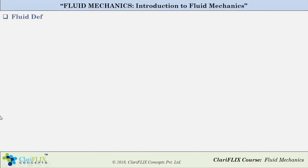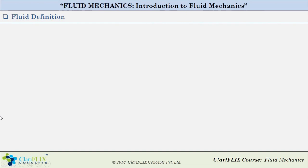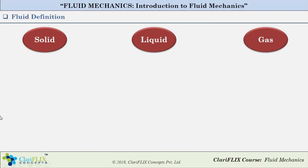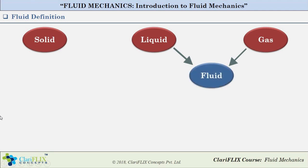We have been studying from our school days that a substance usually exists in one out of three primary phases: a solid, a liquid, and a gas. Obviously there is a fourth — plasma — but it only exists at very high temperature. As discussed briefly in the previous session, all substances in a liquid or a gas form are considered to be a fluid, since fluid is a substance that can flow.